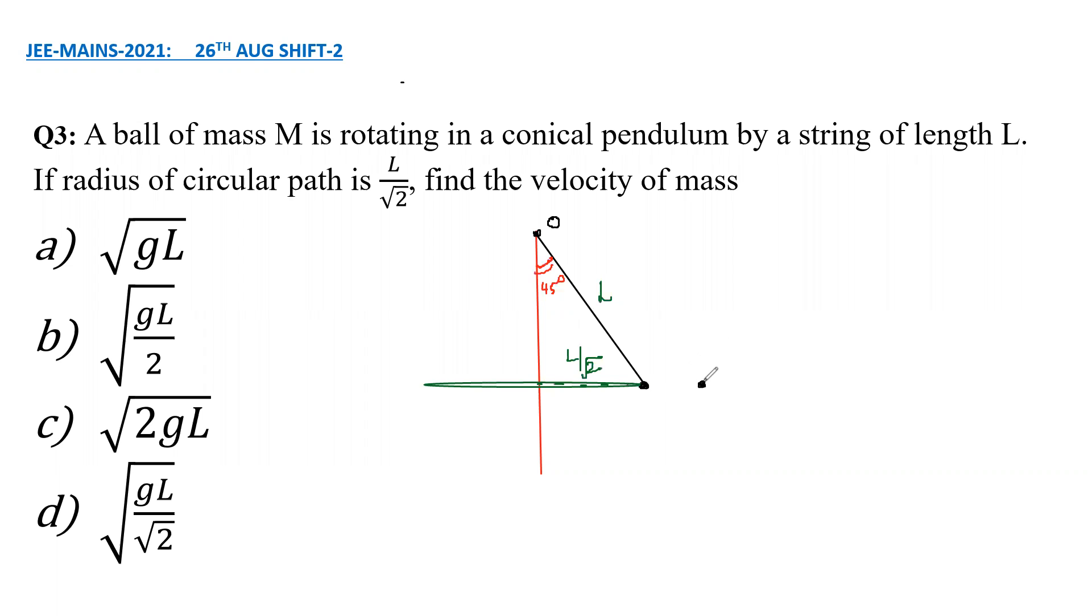Now consider the equation of motion for the bob. So on this bob we have T, if you take this as theta, T cos theta and T sine theta as the components of tension. And apart from that gravity is acting on it. So T cos theta minus mg equals 0 because the bob has no acceleration in the vertical direction. And if its velocity is V, then towards the center the force is T sine theta that will provide necessary centripetal acceleration of V square upon radius, which is L by root 2.